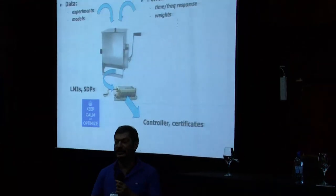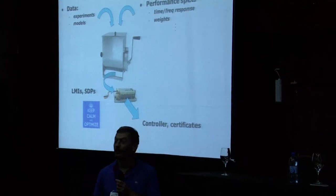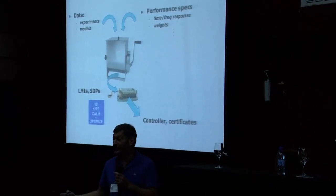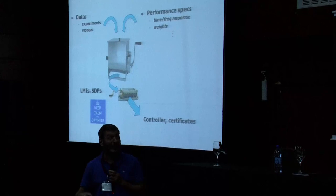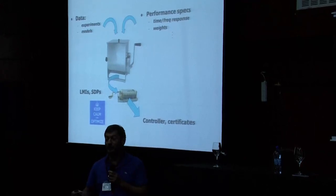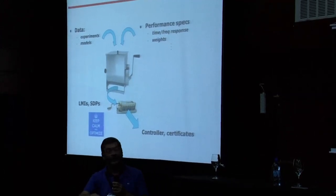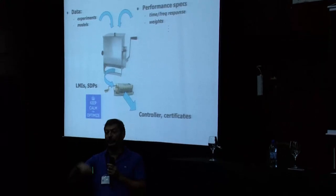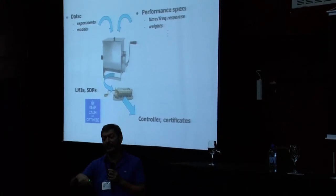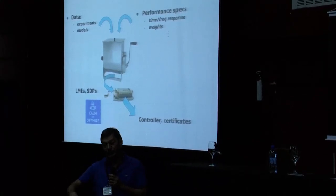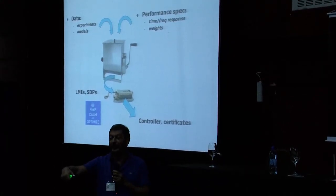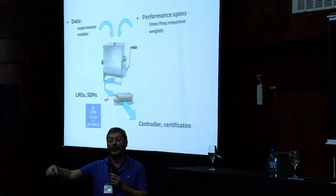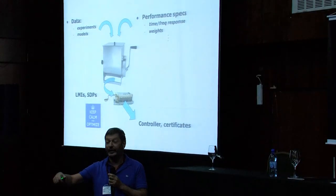If you talk to friends outside robust control, or even worse, if you talk to the funding agencies and say 'robust linear control?' — I mean, come on. That's a solved problem, right? We have this beautiful machinery where you put in experiments, you put in your models. On the other hand, you put in your performance specs, maybe weighting functions. You turn the crank, and this beautiful machinery spits out an LMI or an SDP.